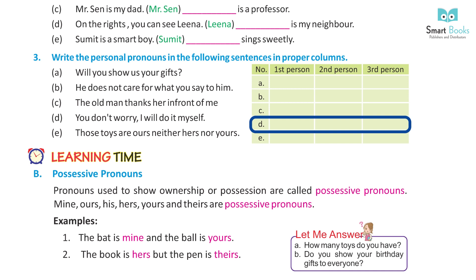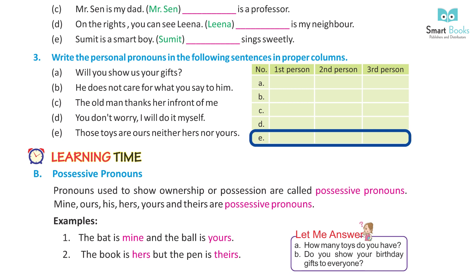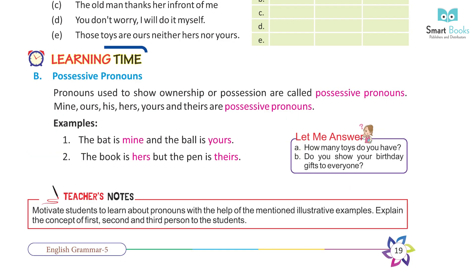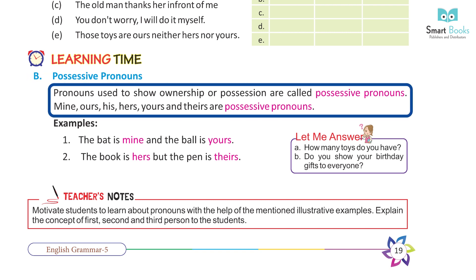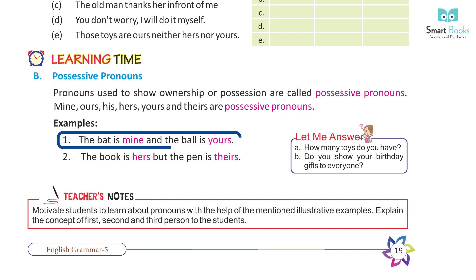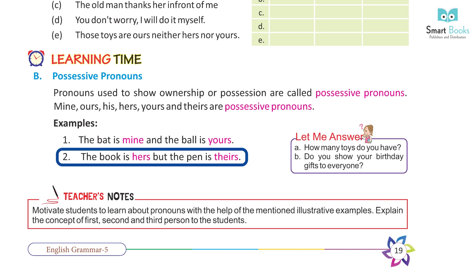Learning time — possessive pronouns. Pronouns used to show ownership or possession are called possessive pronouns. Mine, ours, his, hers, yours, and theirs are possessive pronouns. Examples: one — the bat is mine and the ball is yours. Two — the book is hers but the pen is theirs.